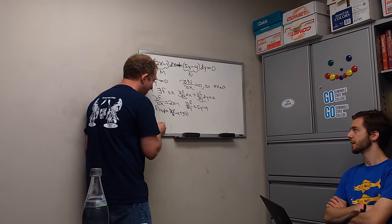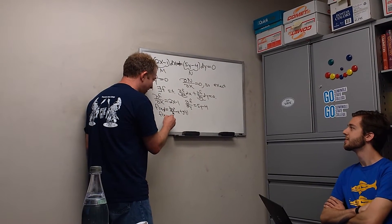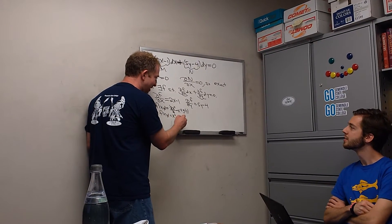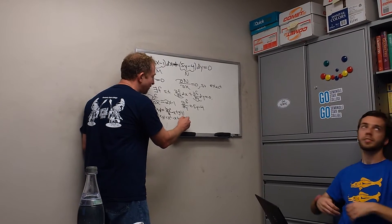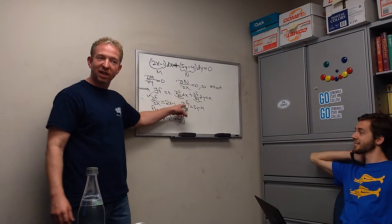These cancel. So you're left with x squared minus x plus g of y. So we're left with f of xy equals x squared minus x plus g of y. Alright, so we've used this condition. Now we just have to use this one. So we'll compute del f del y.